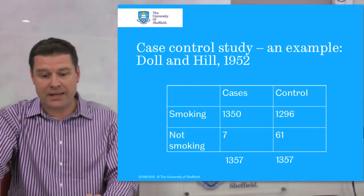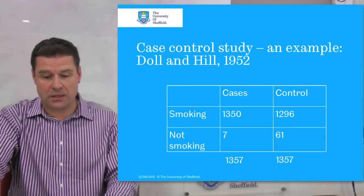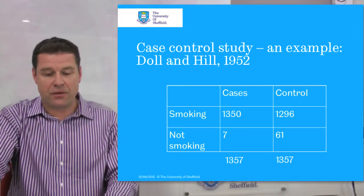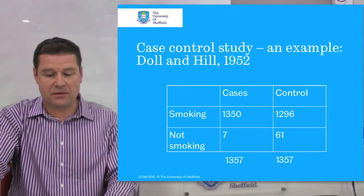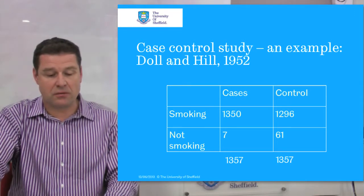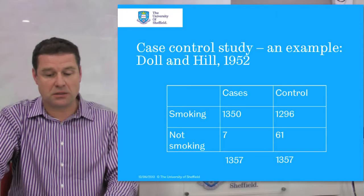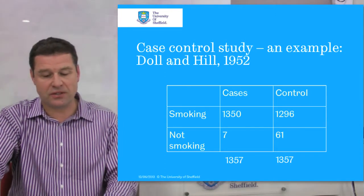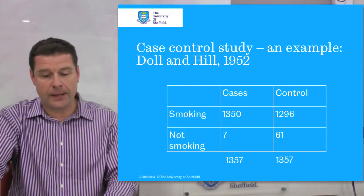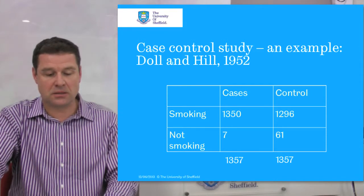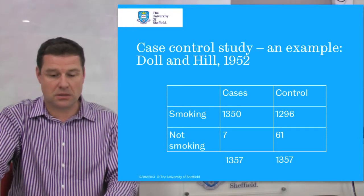These are the data from that study. Looking at the cases, they had 1,357 cases of lung cancer, 1,350 of which smoked and 7 were non-smokers. They also had 1,357 controls: 1,296 were smokers and 61 were non-smokers.